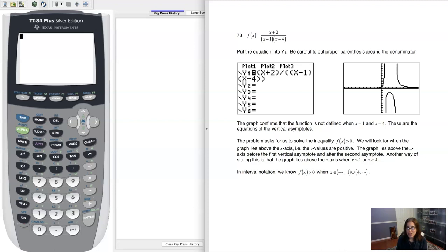Hey Math 31, I had a question on section 5.6 number 73. This was asking us to figure out where f of x is greater than 0. When a function is greater than 0 graphically, it just means its graph is above the x-axis.